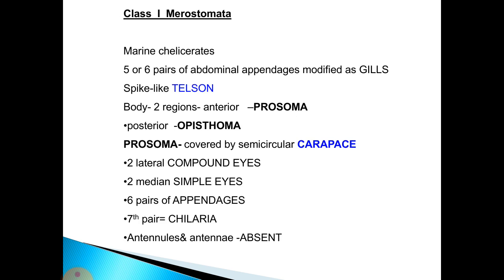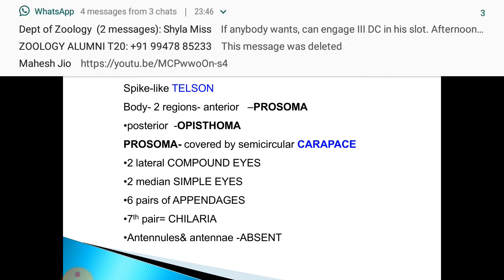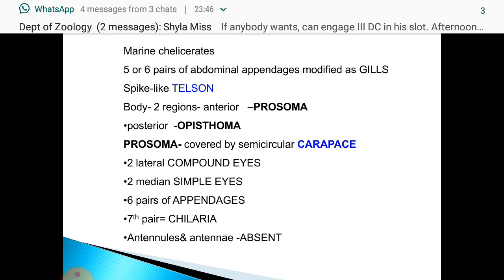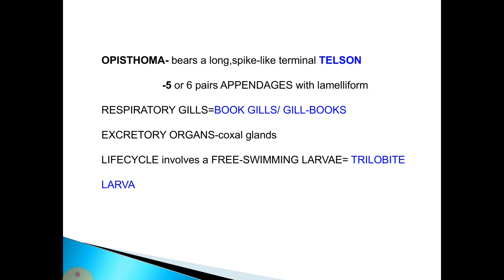Merostomata includes marine forms with five or six pairs of abdominal appendages modified as gills. It contains a spike-like telson and the body consists of two regions: anterior prosoma and posterior opisthosoma. The prosoma is covered by a semicircular carapace with two lateral compound eyes, two median simple eyes, six pairs of appendages, and a seventh pair known as chilaria. Antennules and antennae are absent. The opisthosoma bears a long spike-like terminal telson, five or six pairs of appendages in a lamellar condition. Respiratory gills are known as book gills or gill books. Excretory organs are coxal glands, and the life cycle includes a free-swimming larva called the trilobite larva, which resembles a trilobite.